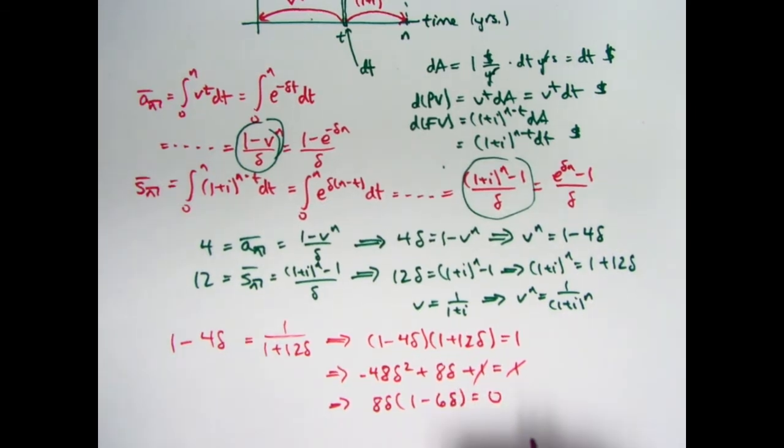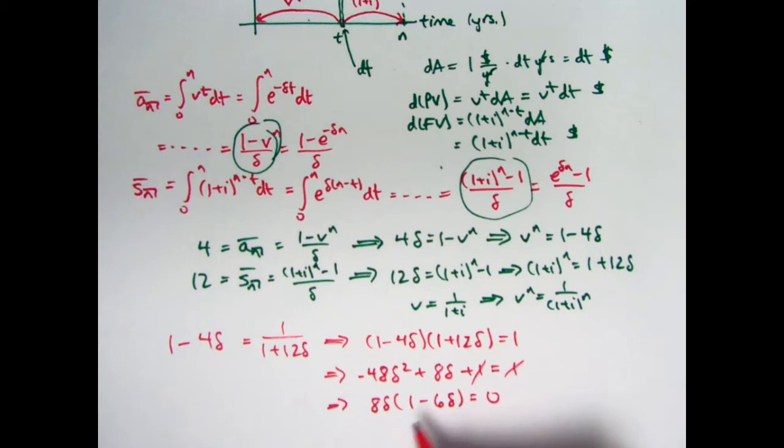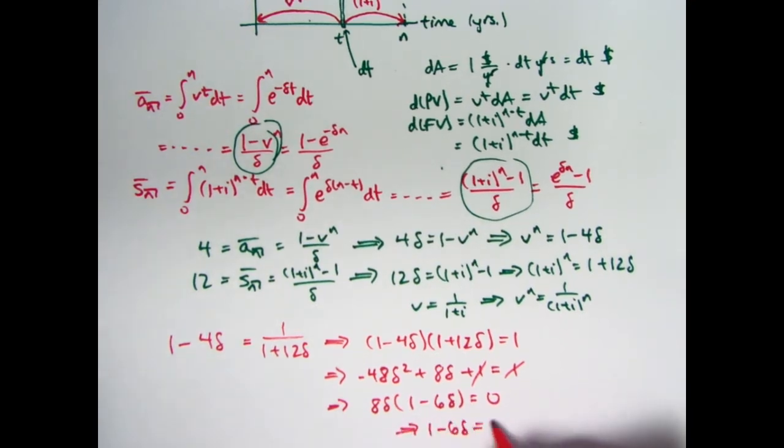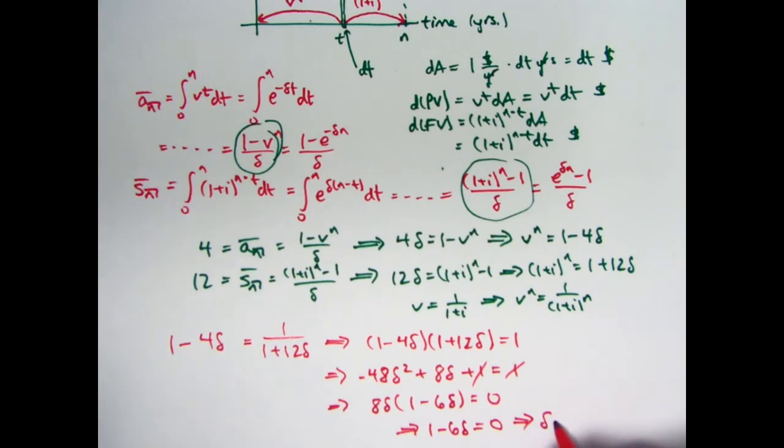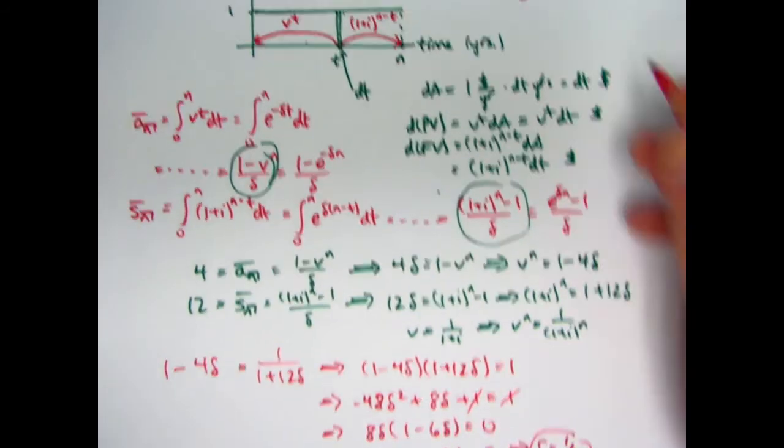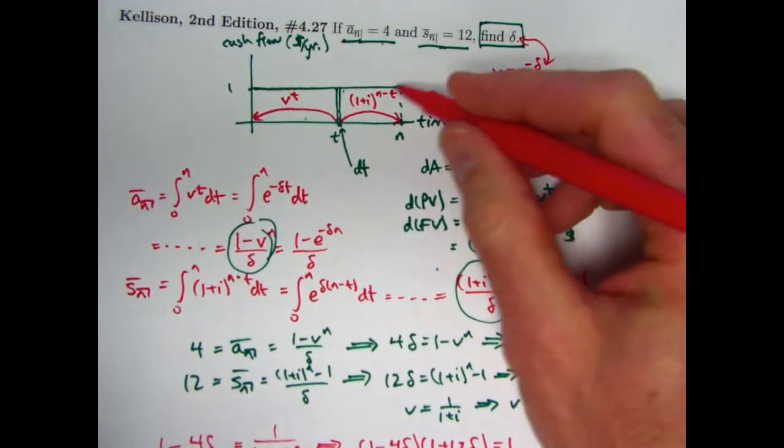We can write this as 8 delta times 1 minus 6 delta equals 0. So that delta is 0, which can't happen. We pick the positive root. 1 minus 6 delta is 0. So delta is 1 sixth. And that is the correct answer. That is the force of interest for this problem based on the givens.